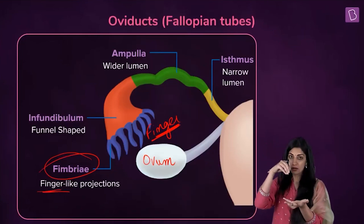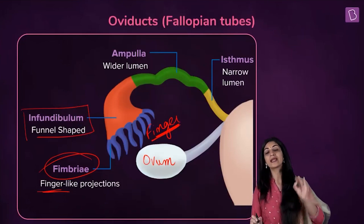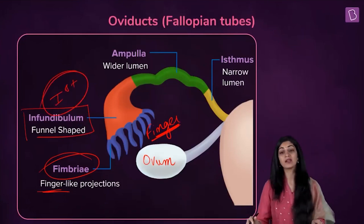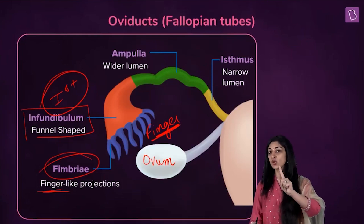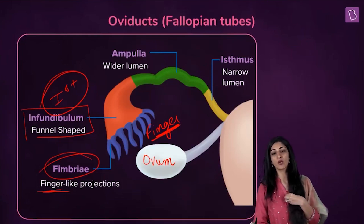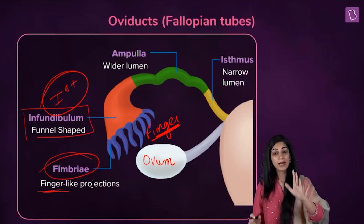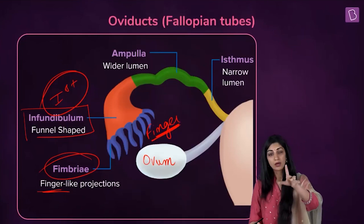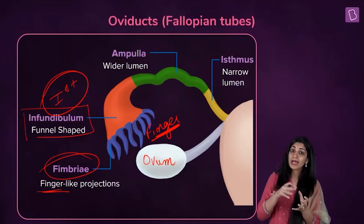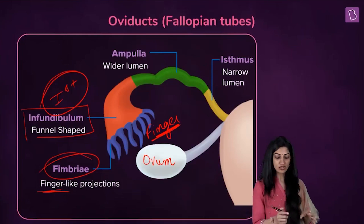The fimbriae are going to grasp the ovum and carry it to the funnel-shaped portion called the infundibulum. This is the first part of the oviduct. If someone asks you what is the first part of the fallopian tube, it is the infundibulum. Fimbriae are the projections from the infundibulum — they are part of this funnel-shaped, trumpet-like structure.